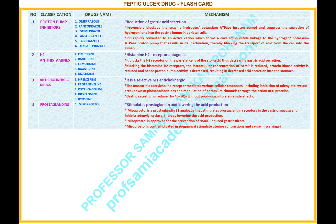Number 4. Name of the classification: Prostaglandins. Drug under this classification: 1. Misoprostol. Mechanism: stimulates prostaglandin receptors and lowers acid production. Detailed mechanism: Misoprostol is a prostaglandin E1 analog that stimulates prostaglandin receptors in the gastric mucosa and inhibits adenylyl cyclase, thereby lowering acid production. Misoprostol is approved for the prevention of NSAID-induced gastric ulcers. Misoprostol is contraindicated in pregnancy as it stimulates uterine contractions and causes miscarriage.